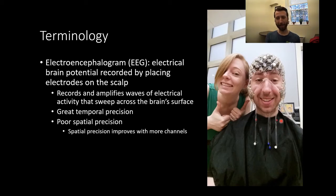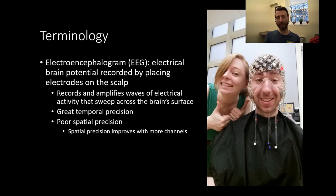This picture is from my grad school years, serving as a subject to help collect some pilot data. This is a really nice EEG setup — I think it's a 256-channel net. Each one of these little nodes is basically an electrode sensor, with some salty conductive medium that the net is soaked in. Each node is picking up signal from a specific region of the brain at that time.